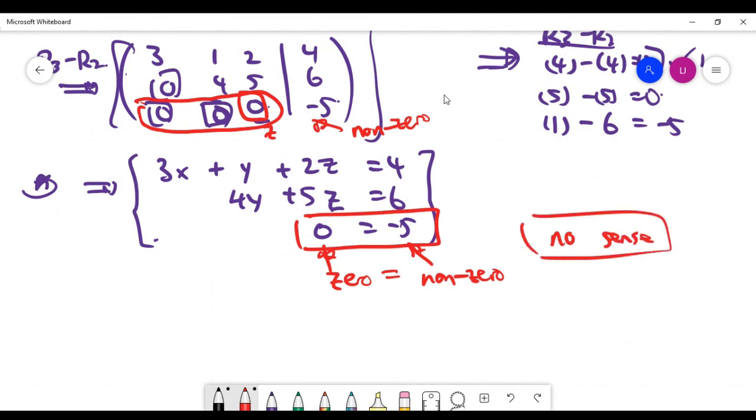So it means what? You are now having an updated system in the matrix form, which actually does not make sense because of course we understand zero cannot be equal to minus five.